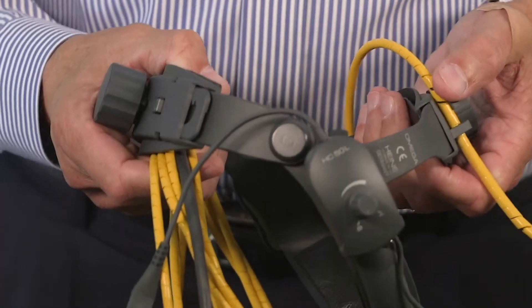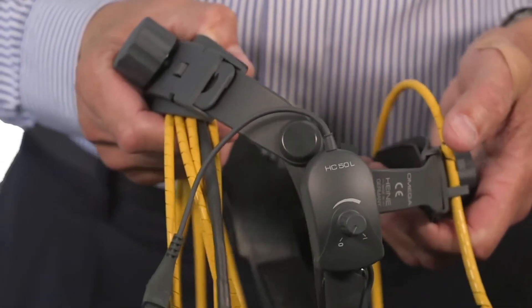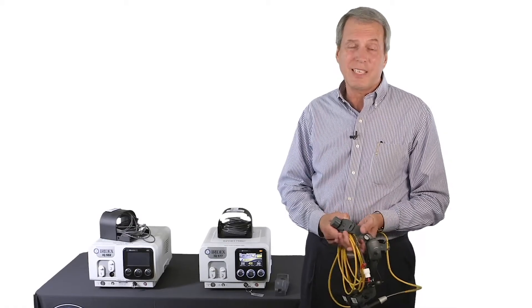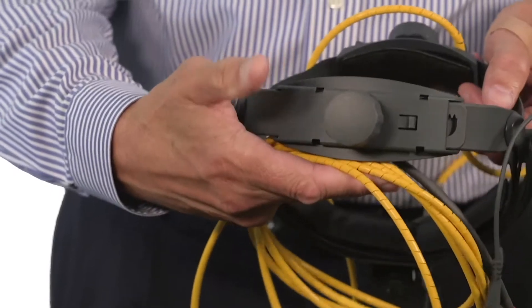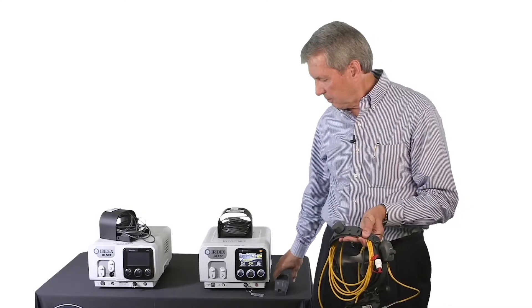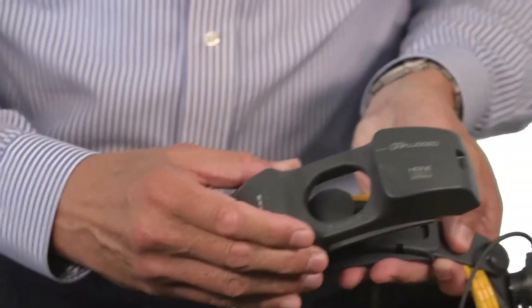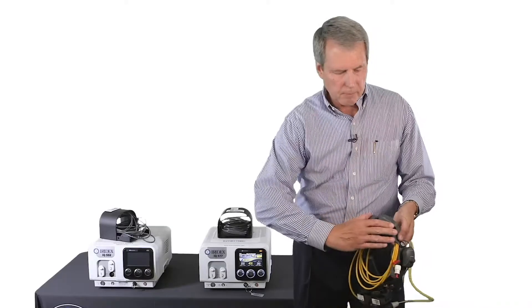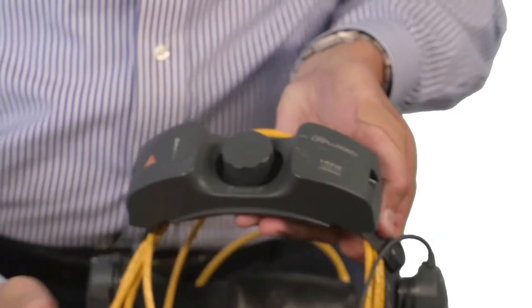As the new Iridex TrueFocus Laser Indirect Ophthalmoscope is battery operated, the first thing you'll need to do before using it the first time is attaching the battery. The battery attaches to the back of the headband by placing it over the band adjustment knob and locked into place.